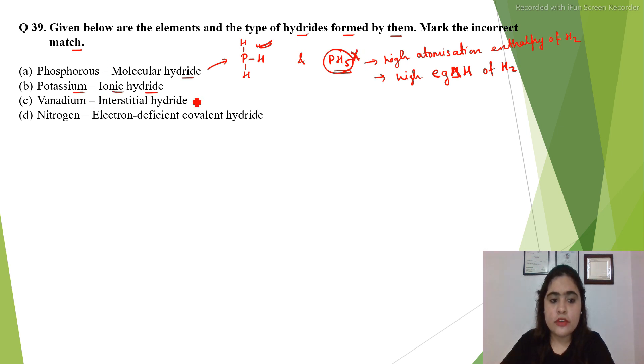Potassium does form ionic hydride, K+ H-. Vanadium does form an interstitial hydride.